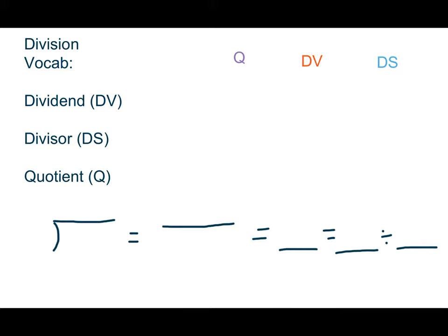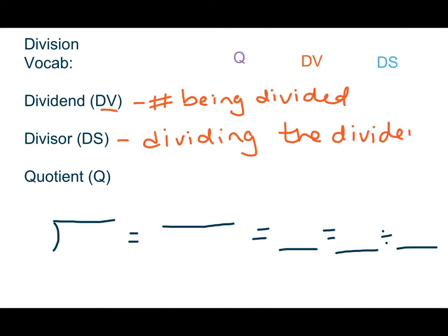And we have three different vocabulary terms for division. We have the dividend, which I'm going to call the db. The dividend is the number that's being divided. The divisor is the number doing the dividing. It's the dividing the dividend. And here's our last term for answer. This is the answer.